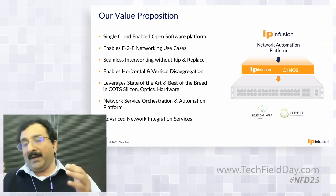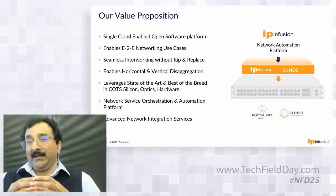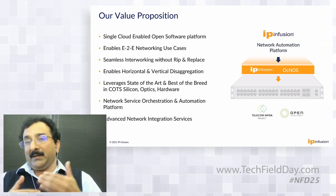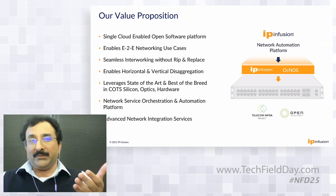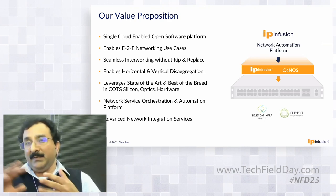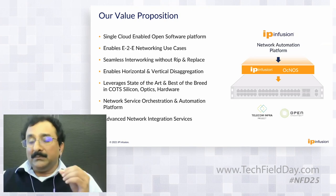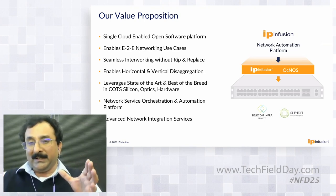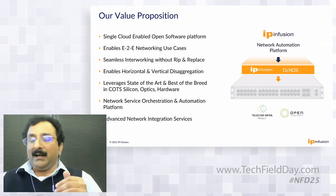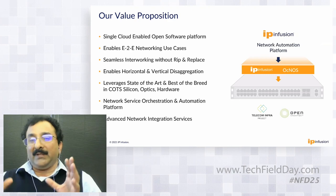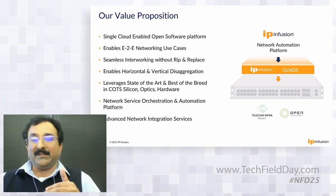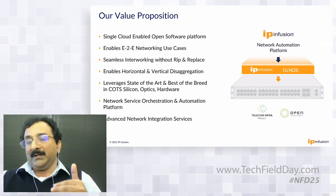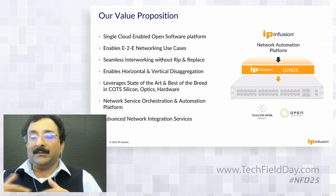By way of control plane, we start with the feature sets we need and mate them with the appropriate hardware — open compute hardware — and come up with a solution. That enables seamless interworking. Since we support the full slew of protocols that an existing network has, it allows us to do service insertion in a seamless manner. I'll start with access networking, and my colleagues will go into exactly how we do it on the transport side and the data center side.